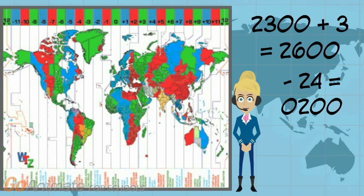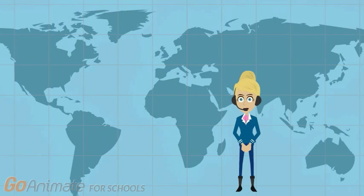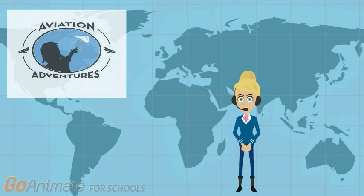This is our final answer. To review: to convert local time to Zulu time, take your local time, add the minus conversion number or subtract the plus conversion number, and that will give you Zulu time. Now you know how to convert local time into Zulu time. It is time for you to practice. Go to your adventure guide, module 4, and complete the exercise on time conversion.